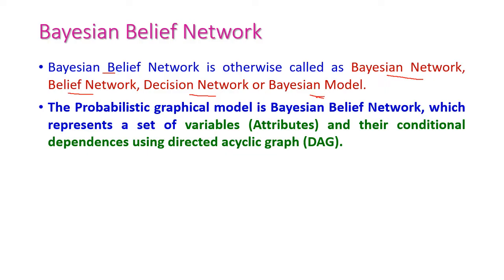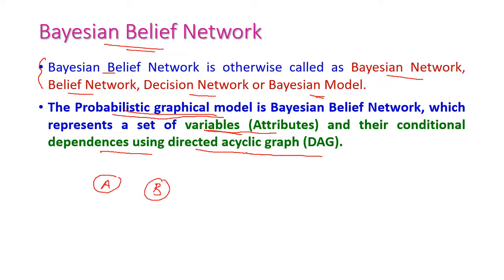The Bayesian belief network is otherwise called as Bayesian network, belief network, decision network, or Bayesian model. It is a probabilistic graphical model that represents a set of variables or attributes and the conditional dependencies of these variables using a directed acyclic graph. Variables are represented as nodes and the conditional dependency is represented by arcs or edges. Here, a is the independent variable and b is the conditionally dependent variable, and this arc represents the relationship between a and b.